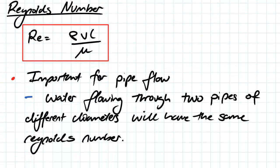So Reynolds number, hopefully you were introduced to this last year. The Reynolds number is equal to density multiplied by the velocity multiplied by some length divided by the viscosity.